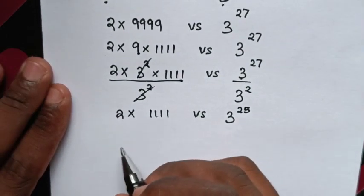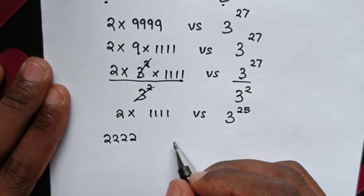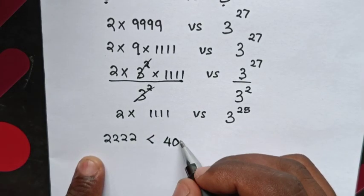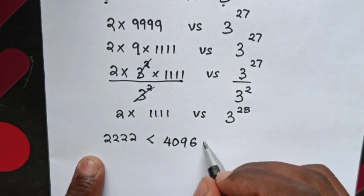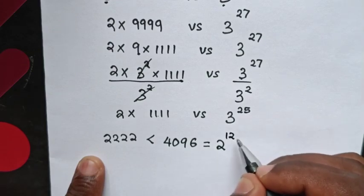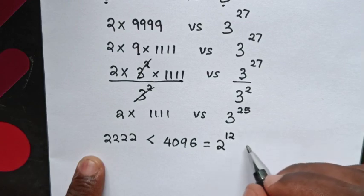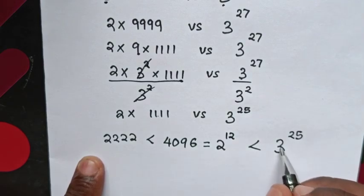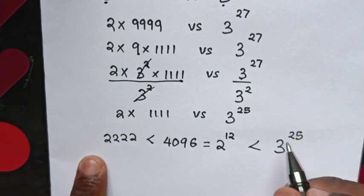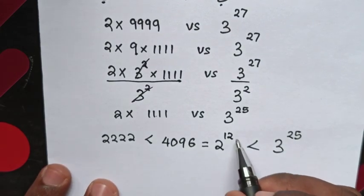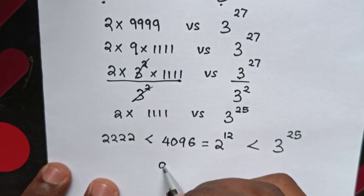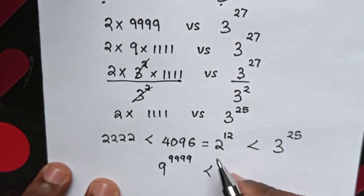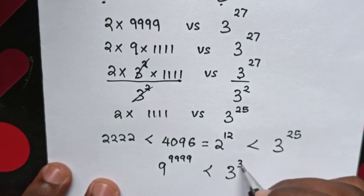So the left side gives 2×1111 = 2222. Comparing with a known number, 2222 is less than 4096, and 4096 equals 2^12. Since 2^12 is also less than 3^25, because base 2 is less than 3 and power 12 is less than 25, the left side 9^9999 is less than the right side 3^3^3^3.